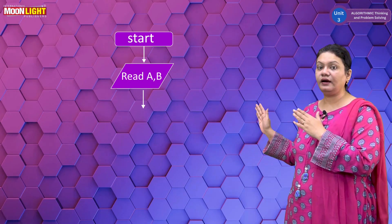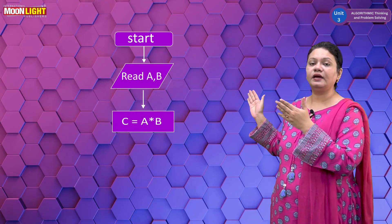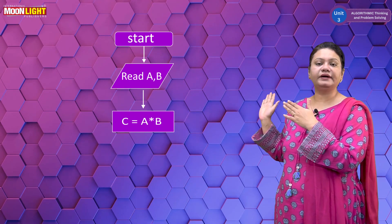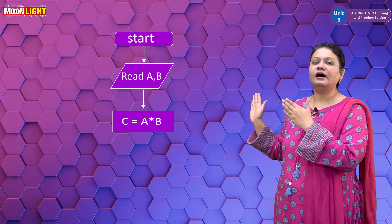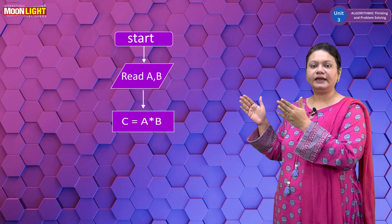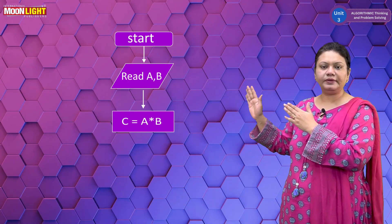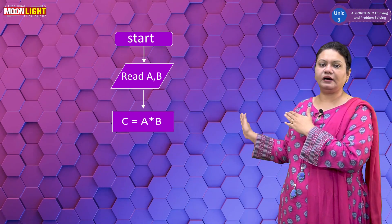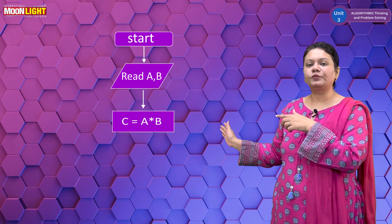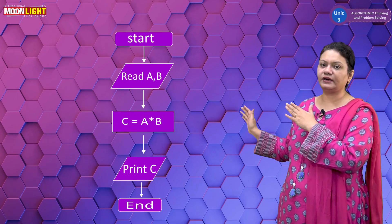After the arrow sign, what do we do in the processing sign? We want to multiply the values. To multiply, we will do A into B. You have the values in the input, and then you will use the output sign, and then our work will stop and end.